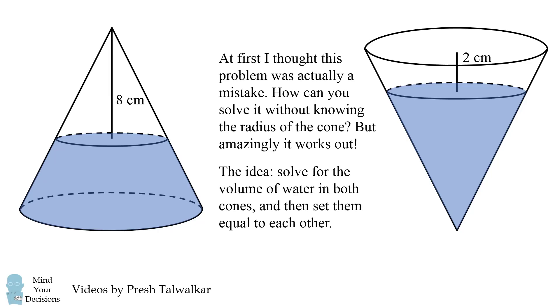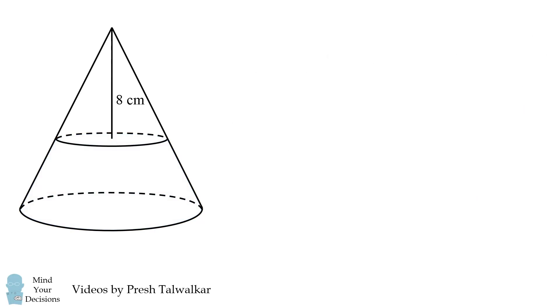The idea is to solve for the volume of water in both cones and then set them equal to each other. It all simplifies so that you can solve for the height of the cone. So let's get started with the cone on the left.